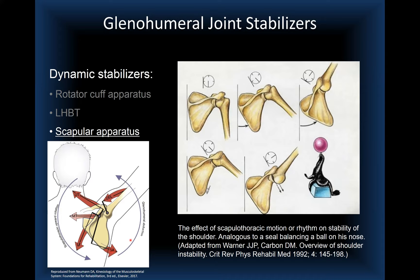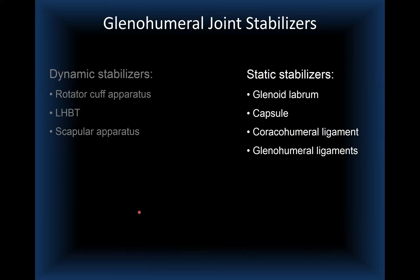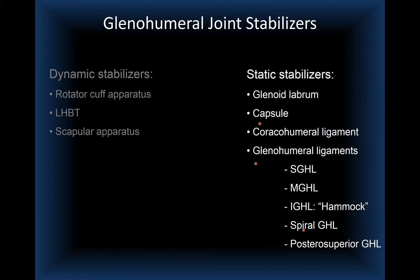Regarding static stabilizers, we have the glenoid labrum, the capsule, the coracohumeral ligaments, and the glenohumeral ligaments. The most known are the superior, middle, and inferior glenohumeral ligaments. There is also the fasciculus obliquus or spiral glenohumeral ligament, and more recently described by Dr. Nicole, the posterior superior glenohumeral ligament. These last ones are not as frequently seen as the superior, middle, or inferior counterparts.